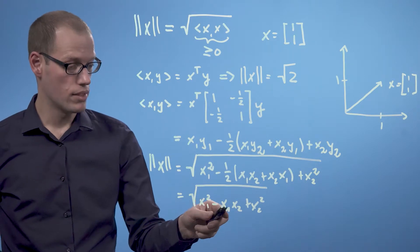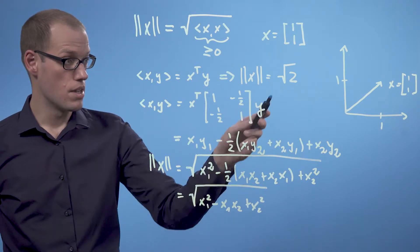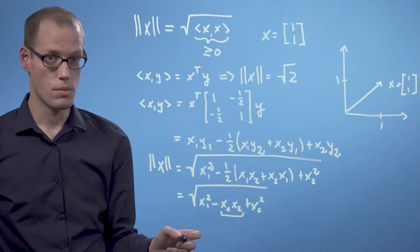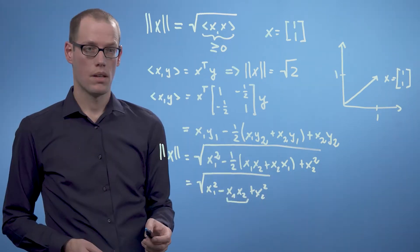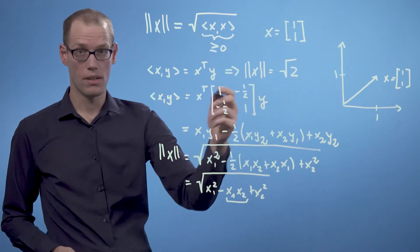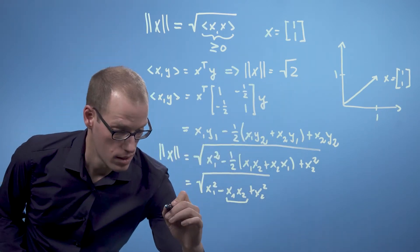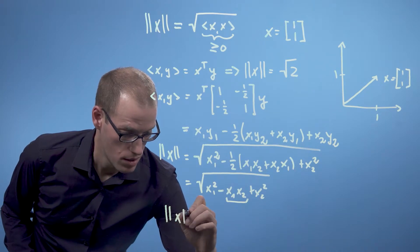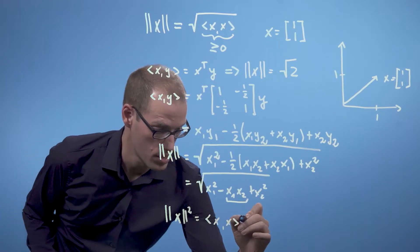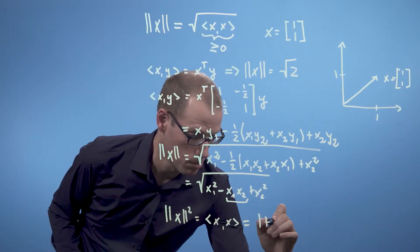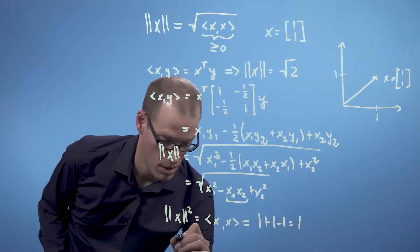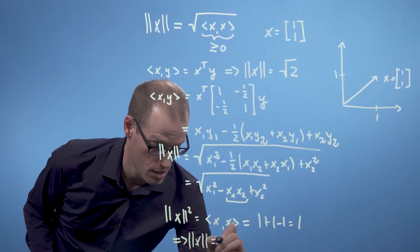And this is identical to the square root of x₁² - x₁x₂ + x₂². And we'll get smaller values than the dot product definition up here if this expression is positive. If we now use the definition of this inner product to compute the length of our vector up here, we will get that the squared norm is 1 + 1 - 1, which is 1.